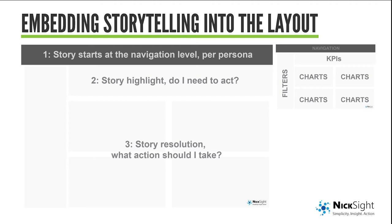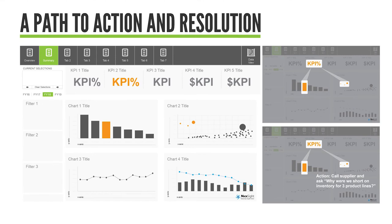Moving to the dashboard layout itself, the story starts at the navigation level, defined by the persona — always designed first for the persona. We move down to the story highlight: do I need to act? This is the rising action, where our KPIs are. Then we've got four charts, story resolution, and what action should I take — a very direct path to action. On a more realized version, you can see one KPI that's orange, and you follow it down to find the impact — ultimately leading to calling a supplier about a shortage on three product lines. Within seconds, we're getting to action and resolution.